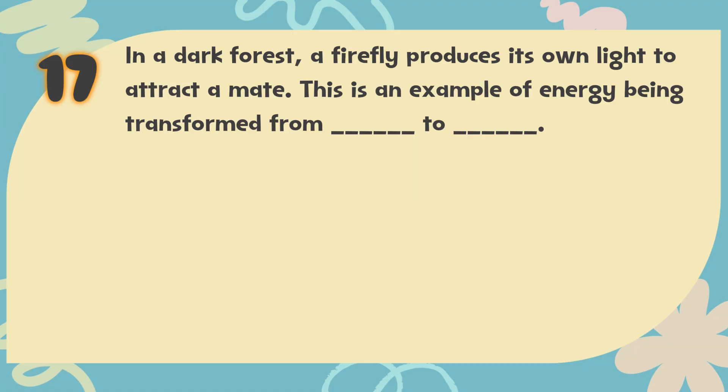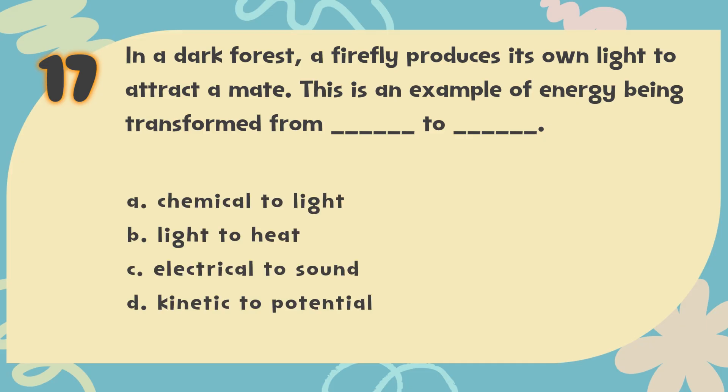Number 17: In a dark forest, a firefly produces its own light to attract a mate. This is an example of energy being transformed from blank to blank. The choices are: A. Chemical to light, B. Light to heat, C. Electrical to sound, D. Kinetic to potential.